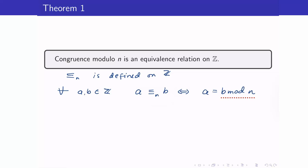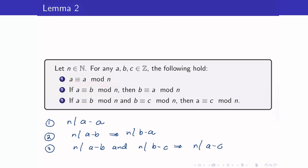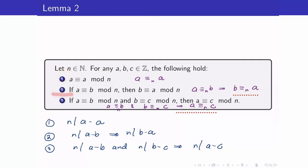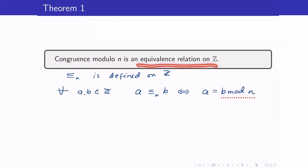The lemma gives us: number one, a is congruent to a modulo n, which means a is equivalent to itself — the reflexive property. Number two, if a is equivalent to b then b is equivalent to a — the symmetric property. Number three, if a is congruent to b and b is congruent to c, then a is congruent to c modulo n — the transitivity property. Therefore, congruence modulo n is indeed an equivalence relation on Z.